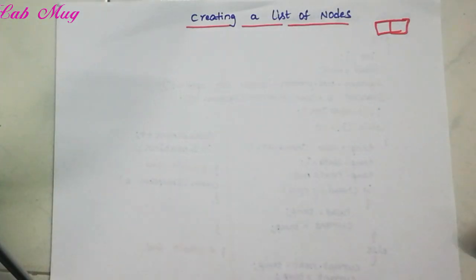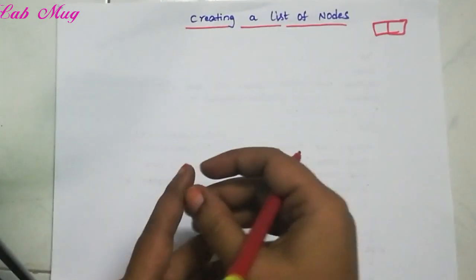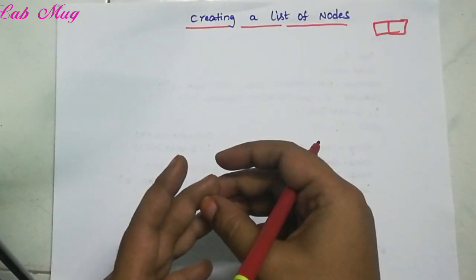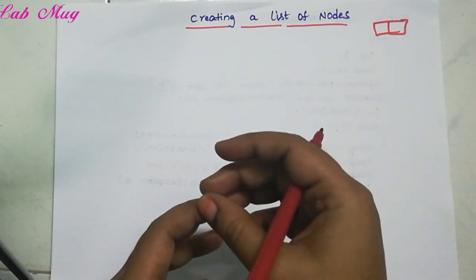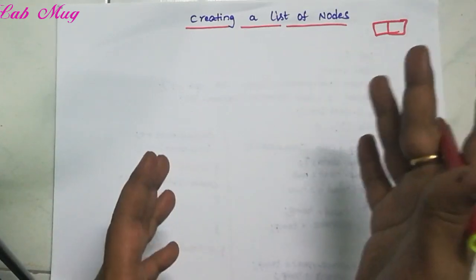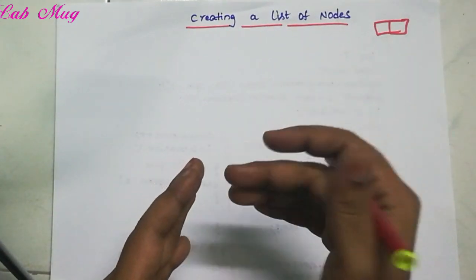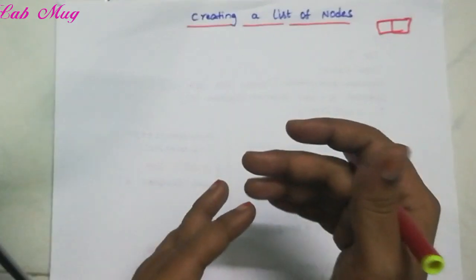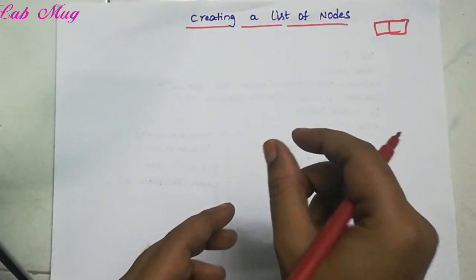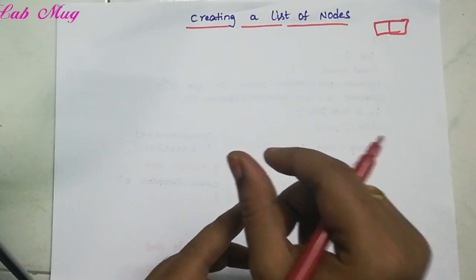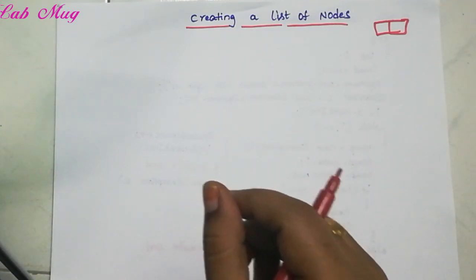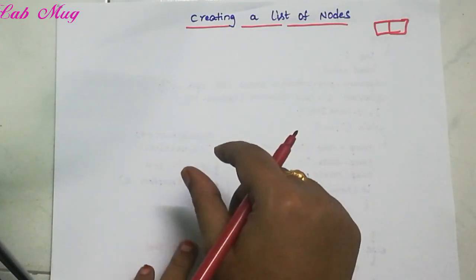We can create a number of operations in the linked list: create operation, insert operation, delete operation, and traversing operation. So there are a number of operations. First, the create operation — we will create the logic in this video.